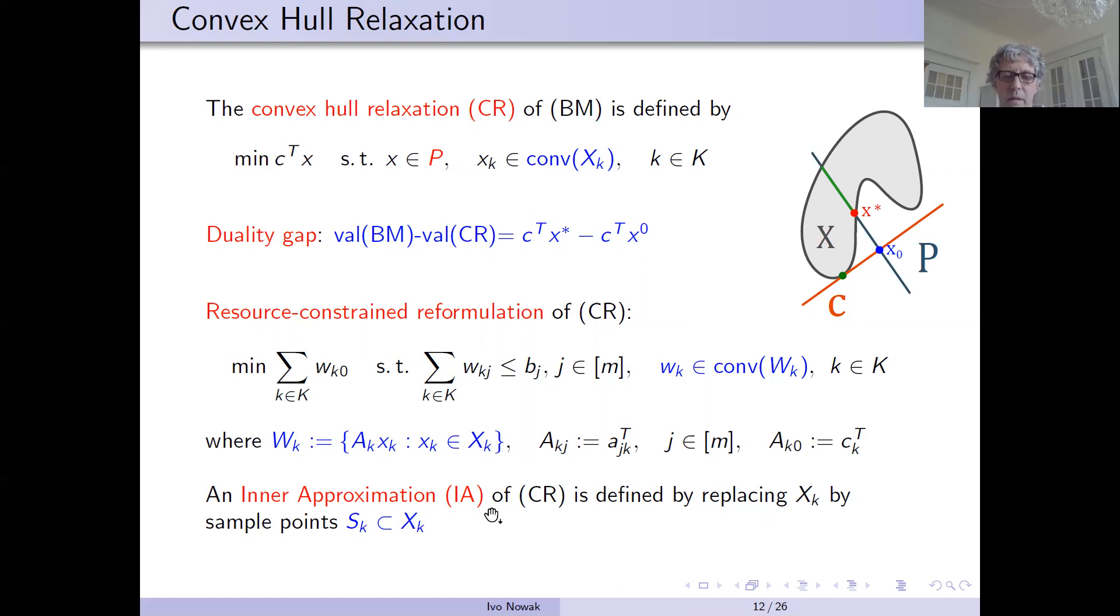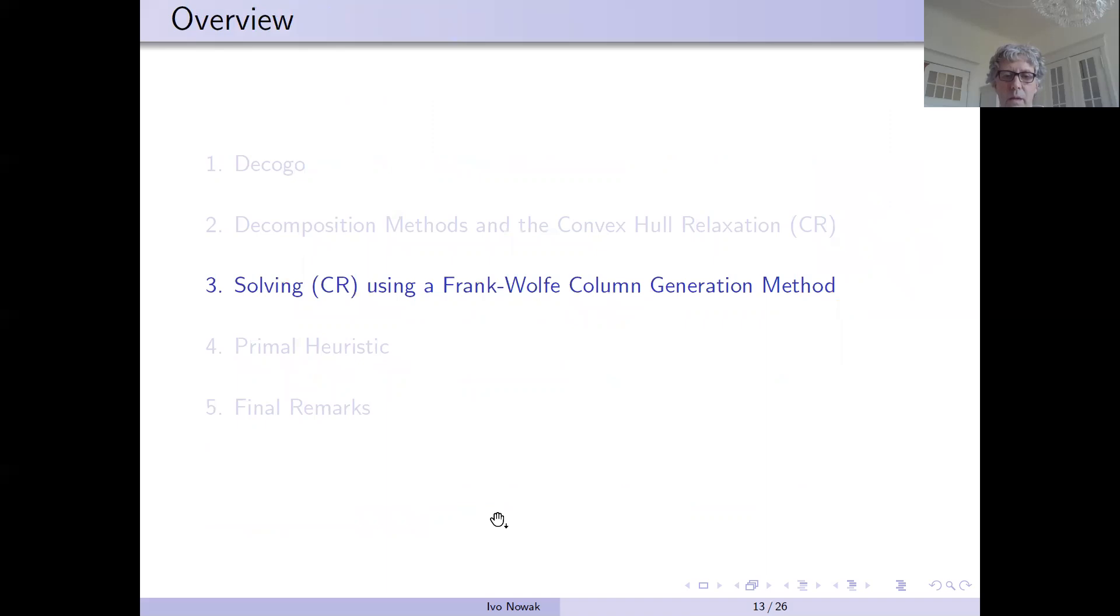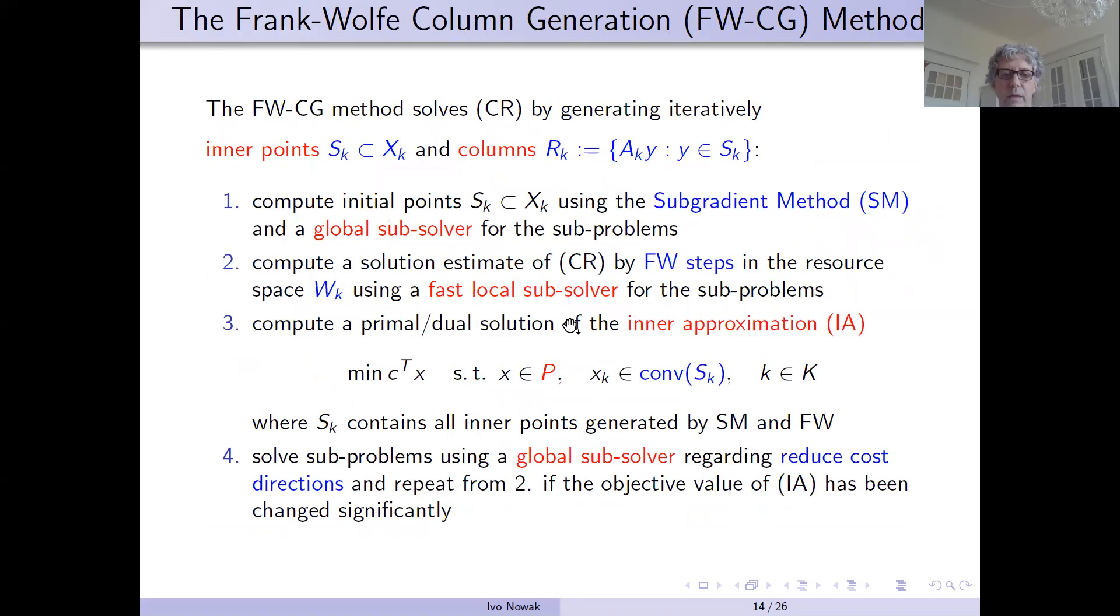The methods are generating inner approximations, which are defined by replacing the feasible set by some feasible points, which we call them Sk, which are sample points. And we developed a Frank-Wolfe method for this.